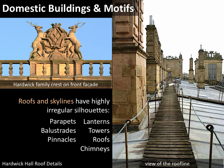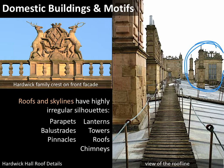Another thing about prodigy houses: the skylines are highly irregular and the roofs are irregular. Here on the left is the beautiful family crest that's the center of the front facade, jutting up above the main horizontal roofline. In the photograph on the right, we're actually standing on the center of the roof looking down it — look at all those chimneys jutting up, those towers, creating this beautifully irregular skyline.